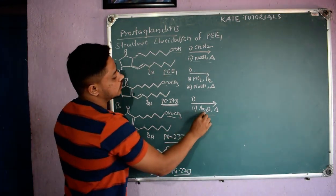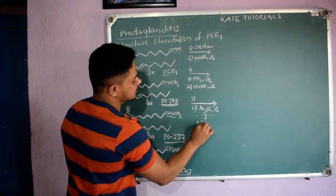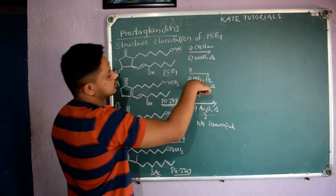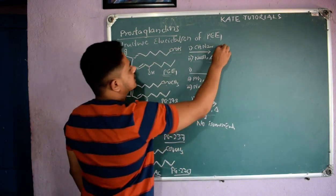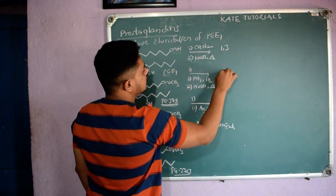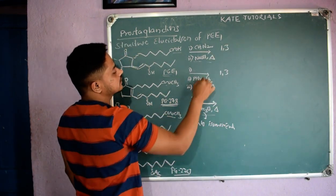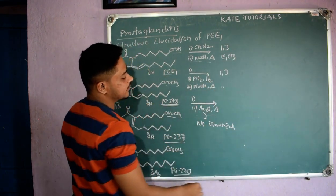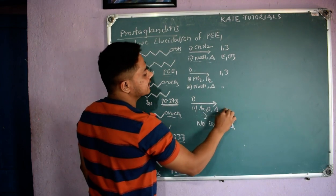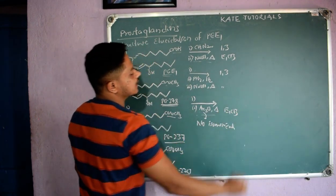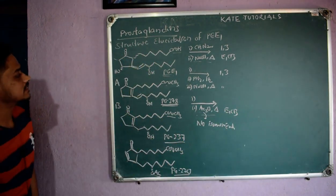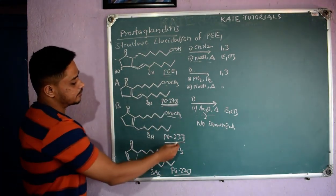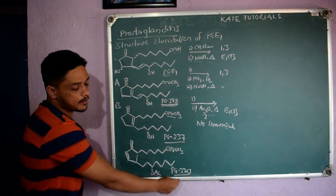In the other cases, isomerization happened — a 1,3-sigmatropic rearrangement. NaOH and heating conditions lead to Cb elimination; here also Cb elimination occurred, and with acetyl anhydride and heating also Cb elimination occurred. So we got three compounds: PG278, PG237, and PG220.